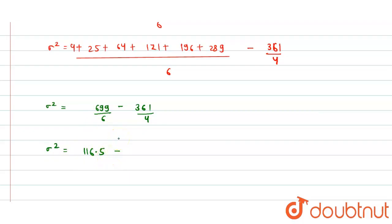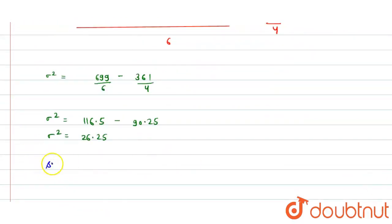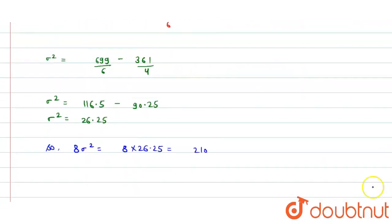So sigma square equals 699 divided by 6 which is 116.5 minus 361 divided by 4 which is 90.25. Therefore sigma square equals 26.25. Now 8 sigma square will be equal to 8 times 26.25, which equals 210.